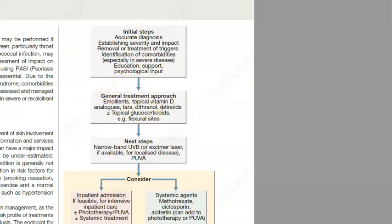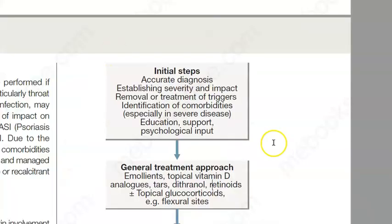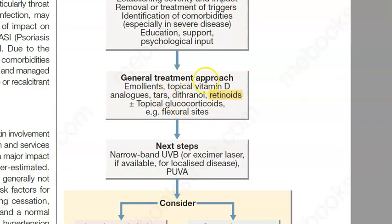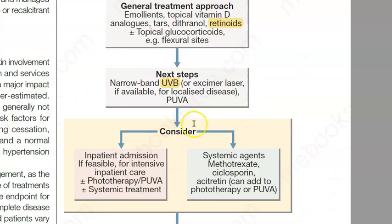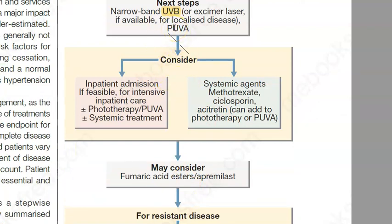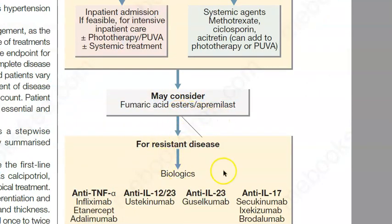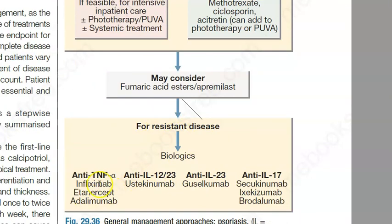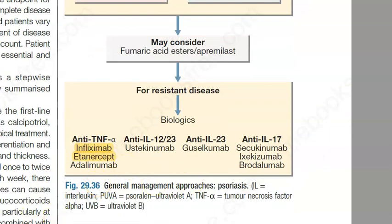How will you treat psoriasis? First diagnose, then give emollients, topical vitamin D analogues, retinoids, and glucocorticoids. Next step is narrow band UVB — ultraviolet B light — along with PUVA, which is psoralen plus UVA. If this doesn't work, inpatient admission for phototherapy and systemic agents: methotrexate, cyclosporine — these are immunosuppressors. You can also consider fumaric acid esters, and for resistant disease, infliximab or etanercept — similar to rheumatoid arthritis drugs.